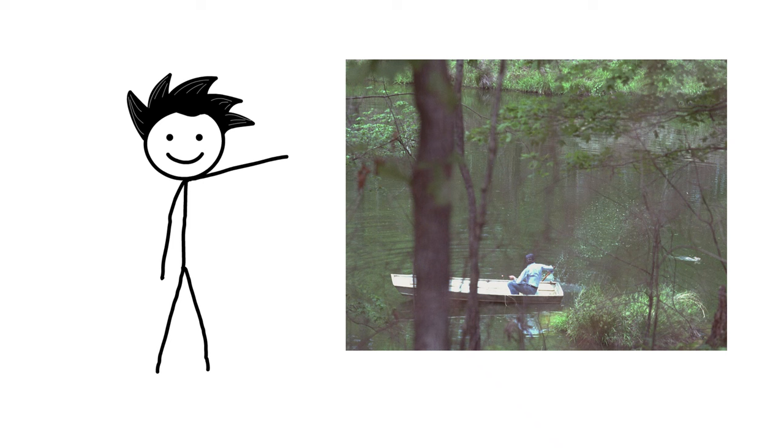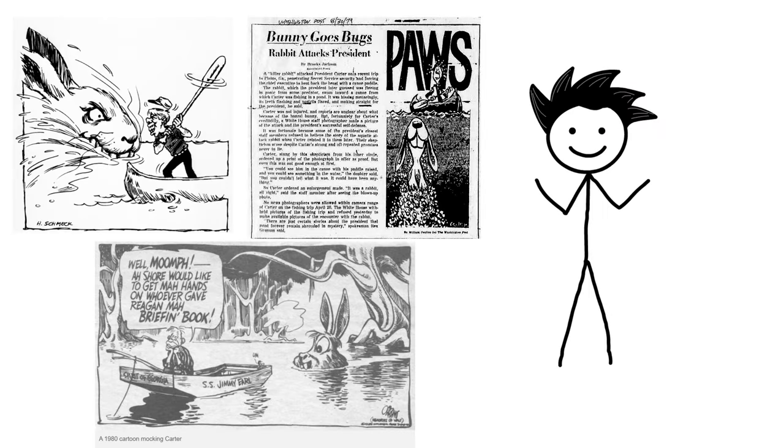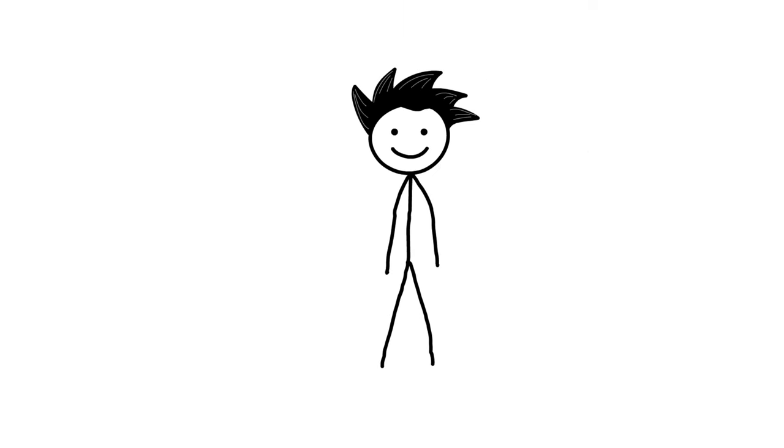This is the photograph taken by the White House, which shows both in one frame. This photograph wasn't shared at that time, so cartoonists drew their own exaggerated interpretation of the event. This rabbit incident was also used to portray Carter negatively, like how someone who gets scared by rabbits is going to lead America and stop the Soviet Union.